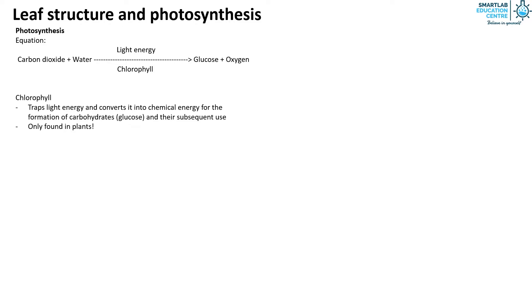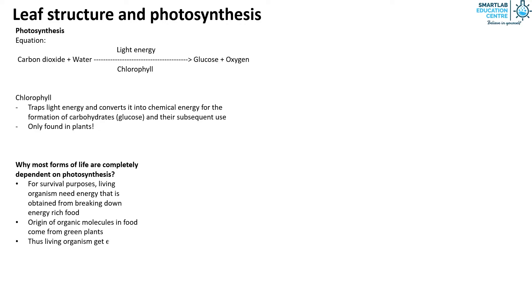Now, why are most forms of life completely dependent on photosynthesis? For survival purposes, living organisms need energy that is obtained from breaking down energy-rich food. The origin of organic molecules in food come from green plants as they can carry out photosynthesis. Thus, living organisms get energy directly or indirectly from the photosynthesis of plants. For example, by consuming vegetables directly or by consuming a chicken that once consumed corns for survival.